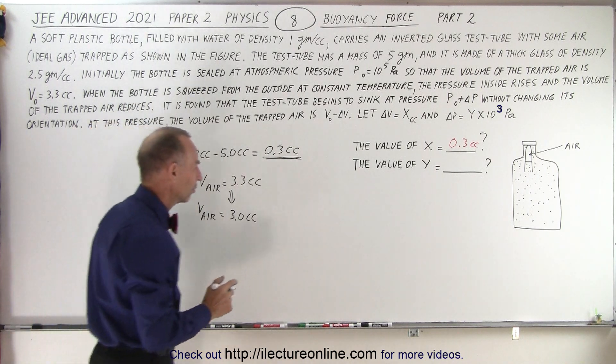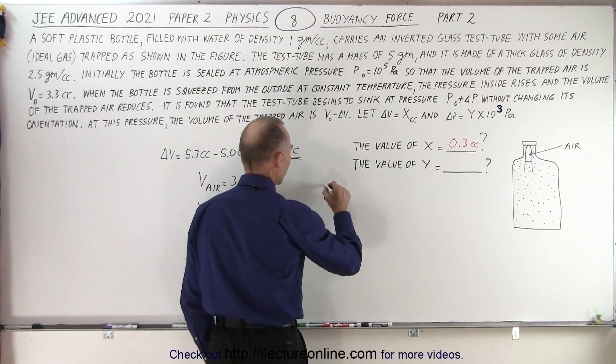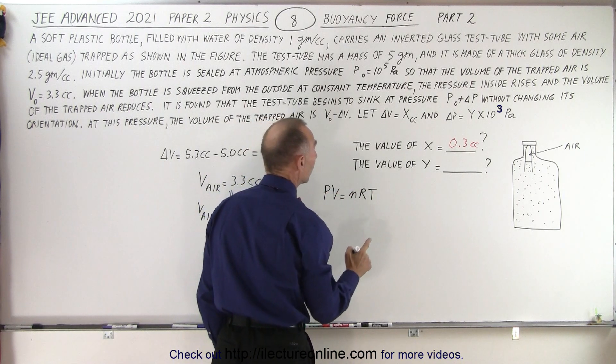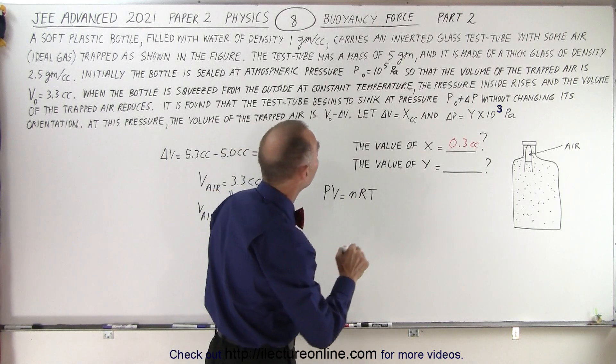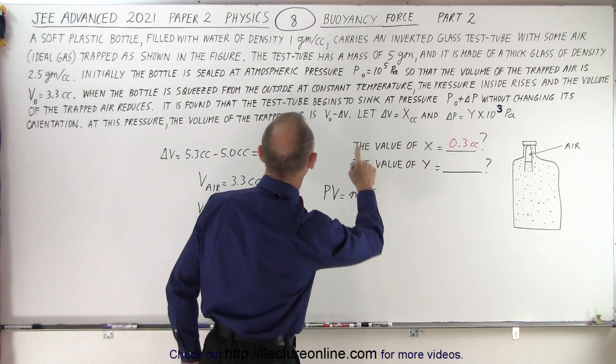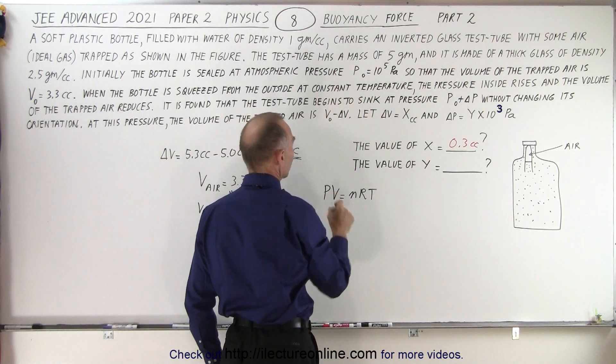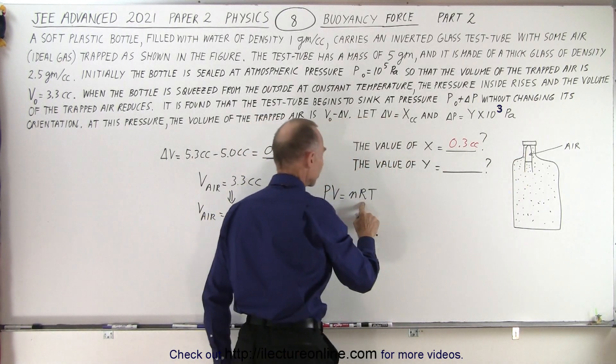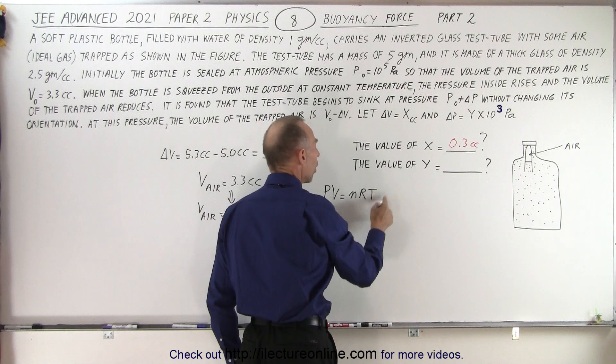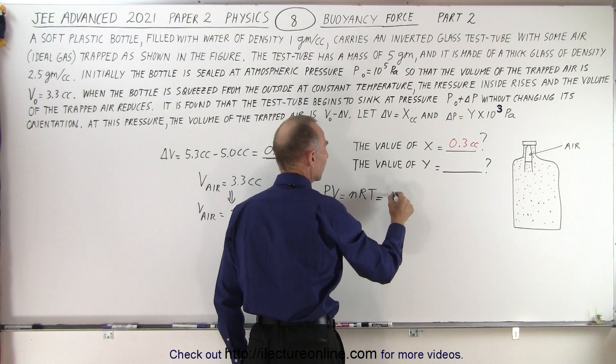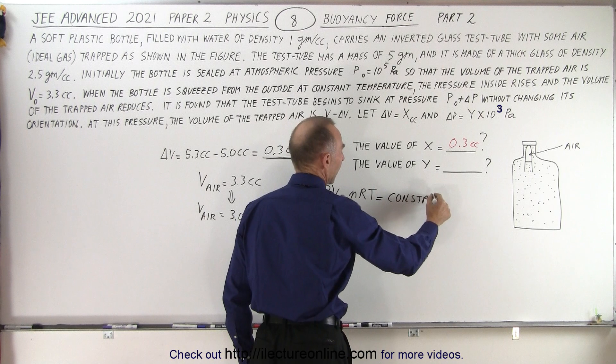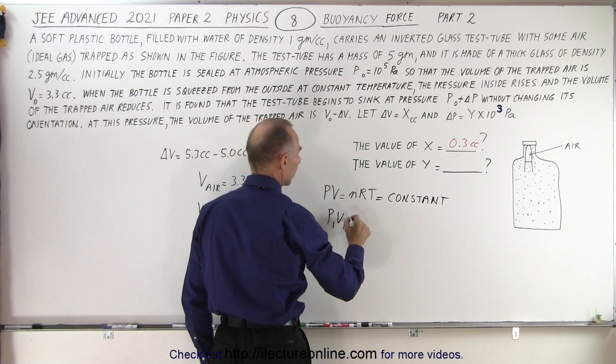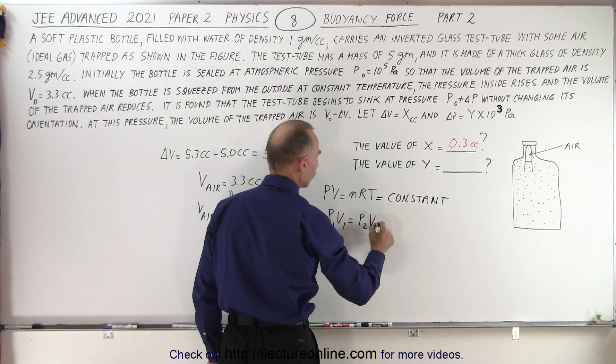We're dealing with an ideal gas, so we use the equation PV equals nRT. But they specifically tell us that the temperature was constant, which means the number of moles of gas inside the tube, R is a constant, and T all will be a constant. So P times V will be equal to a constant. And if that's true we can say that P1V1 must equal P2V2.